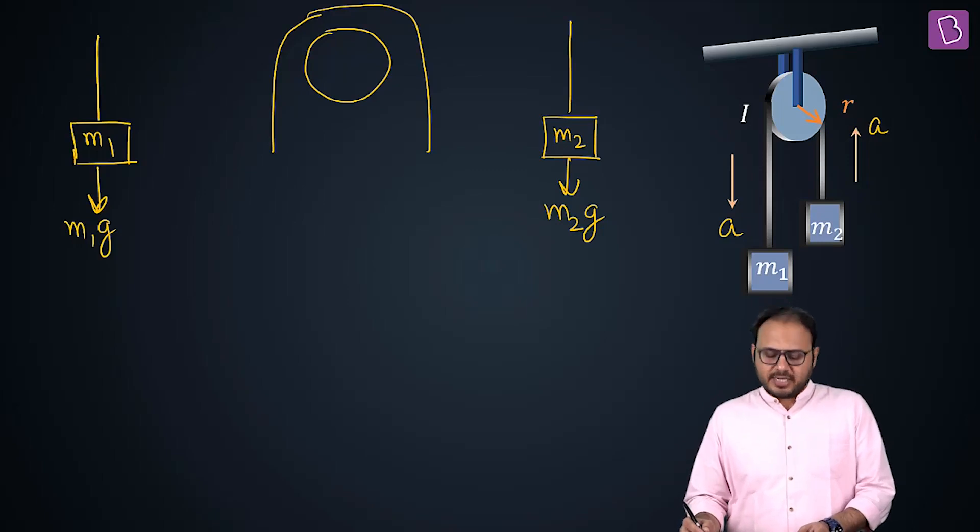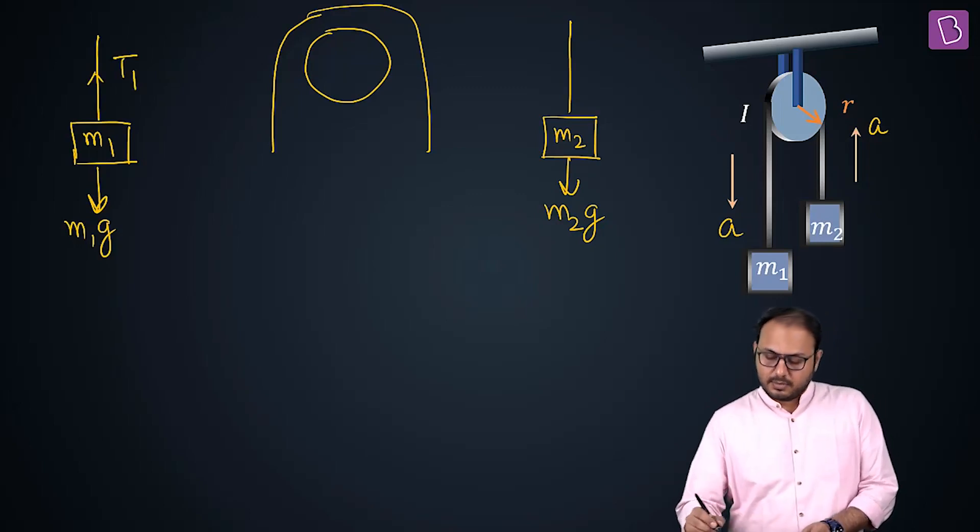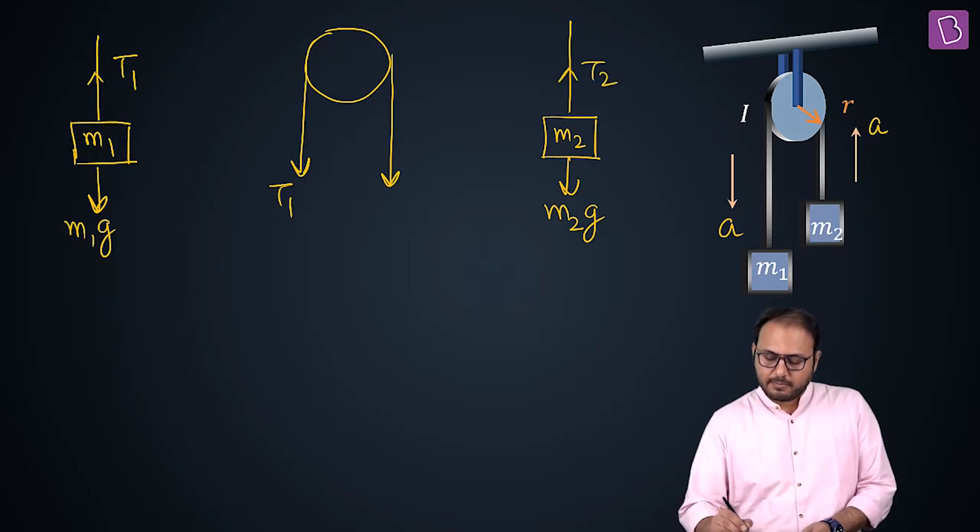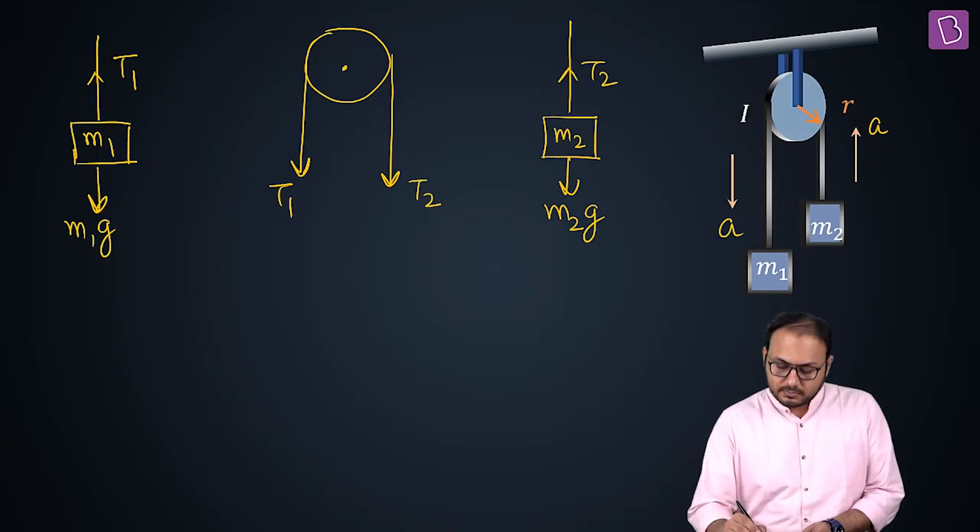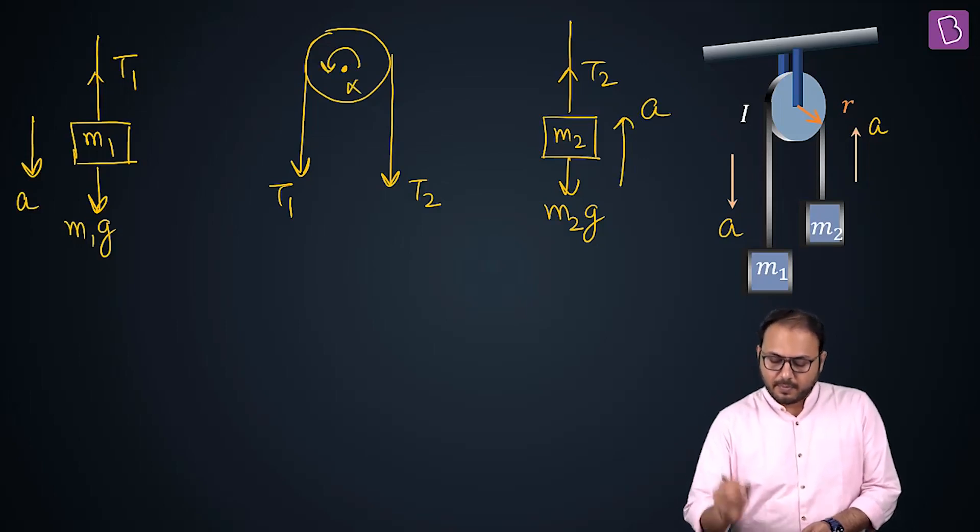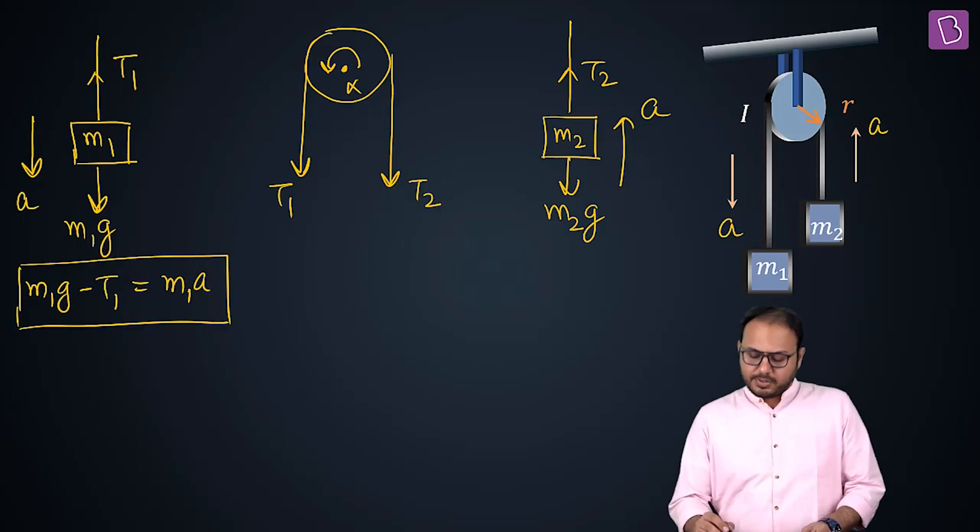You don't need to draw the complete free body diagram of the pulley, I'll tell you why. The good old equation, the good old equation is M1G minus T1 is equal to M1A. How is this for an equation? Oh, very simple.